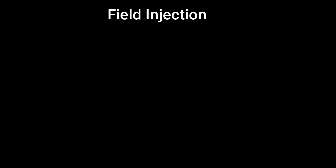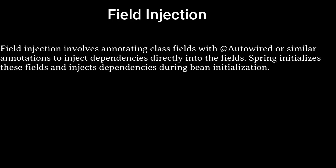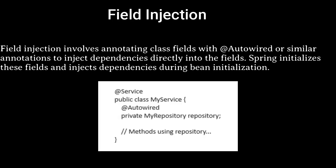Field Injection involves annotating class fields with the auto-wired annotation or similar annotations to inject dependencies directly into the fields. Spring initializes these fields and injects dependencies during bean initialization.